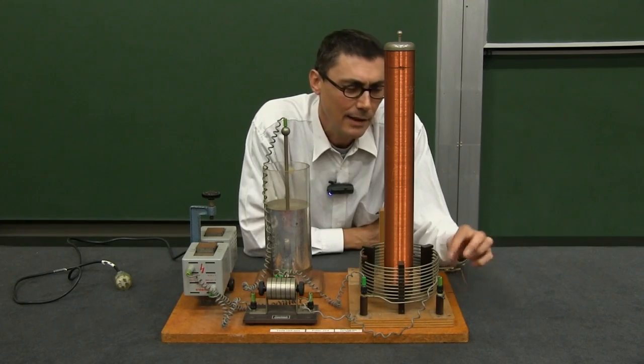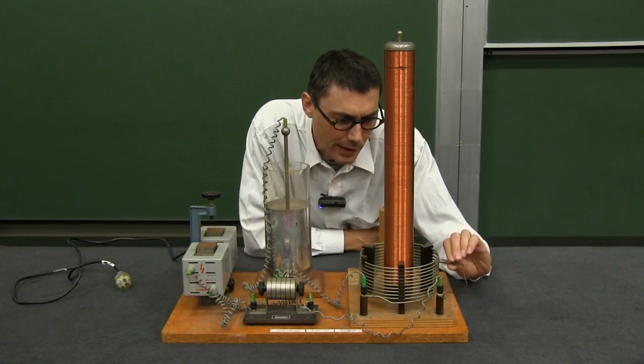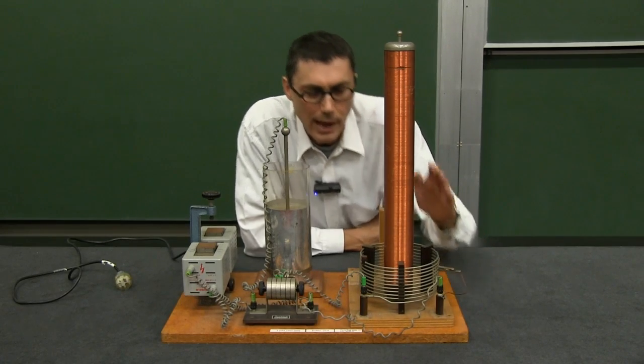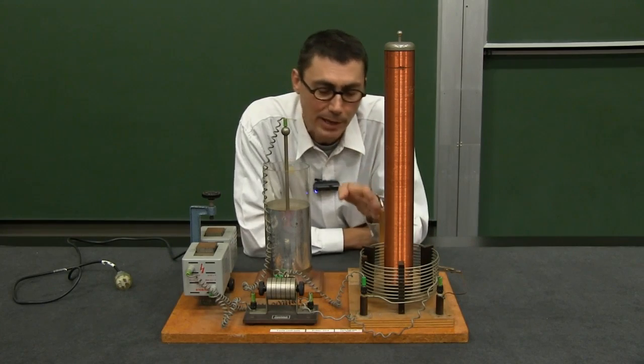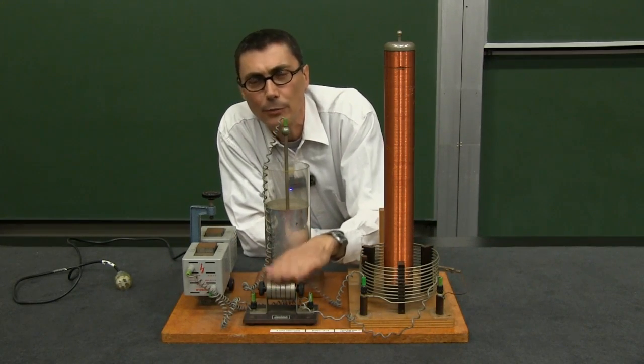And you can see on this system here, I've got an alligator clip where I can tap off the coil at different points so I have a different number of turns. And so I can then tune up my tank circuit so it only picks out that frequency that's generated by the spark that we're interested in.